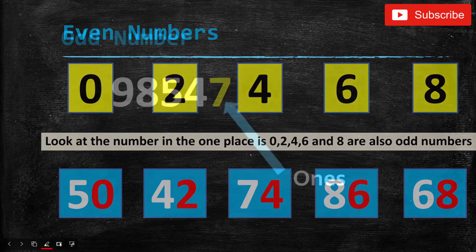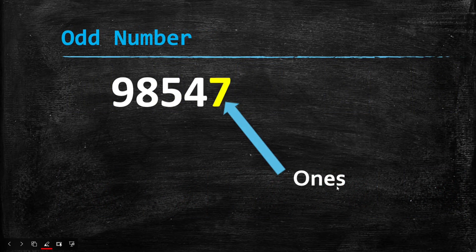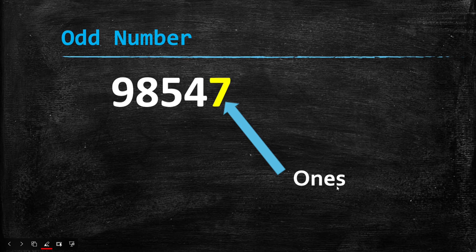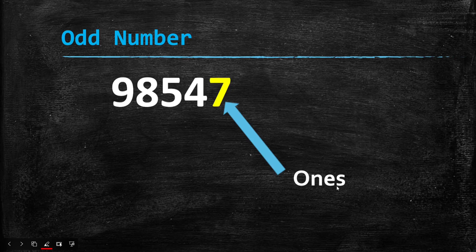Now don't get confused. Even if it is a large digit, for example: 98,547 — no matter how long the digit is, it is easy to find if it is odd or even. The ones place is 7, and we know 7 is an odd number, so 98,547 is an odd number.